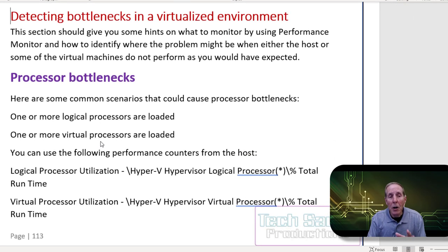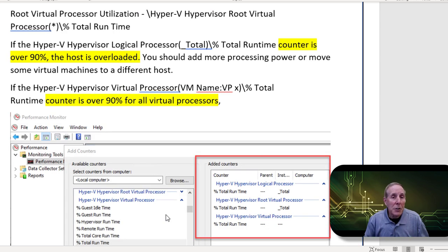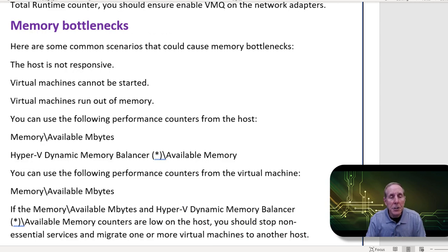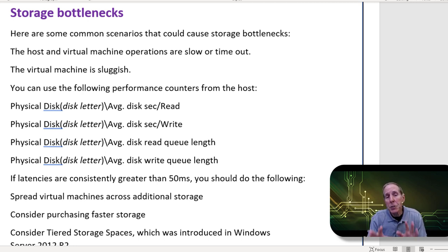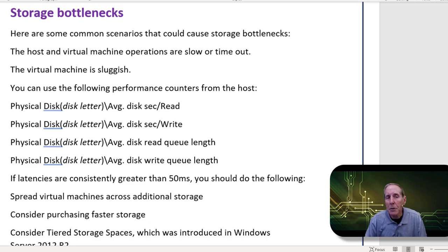Microsoft's documentation on setting up counters for processor bottlenecks is excellent — easy and straightforward. It allows you to look at root processor utilization as well as the hypervisor. Their documentation on detecting memory bottlenecks is very good and the counters are easy to set up. In my case, because I'm running Hyper-V on a desktop, storage is an issue and there's no way to make it faster. But on a server where I'm really trying to balance storage bandwidth, I want to make sure I'm monitoring storage performance.